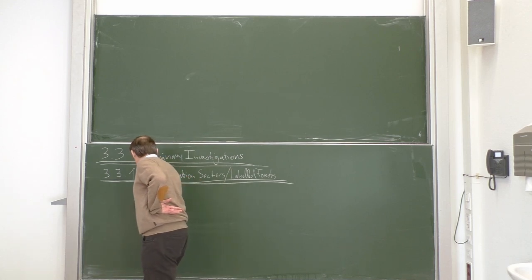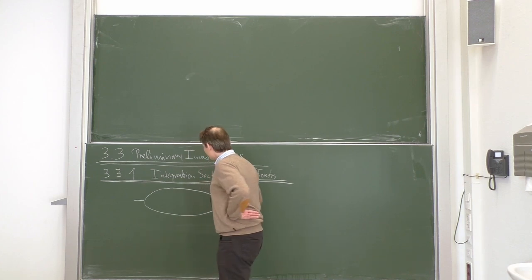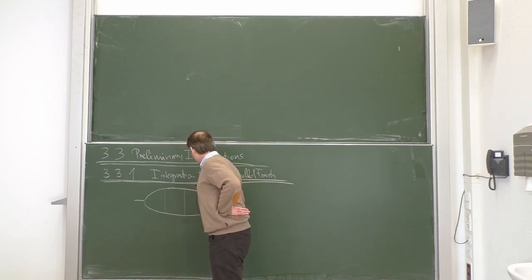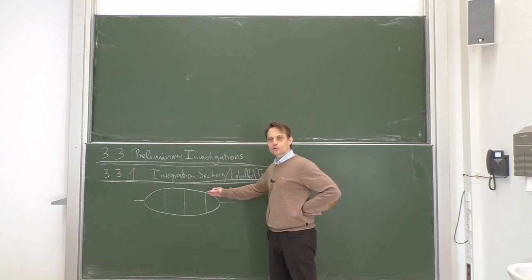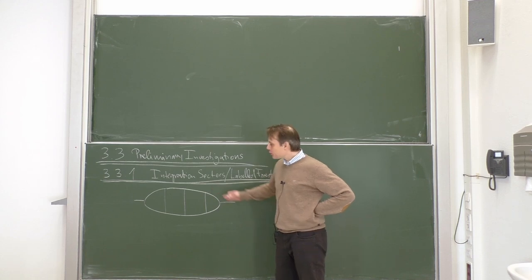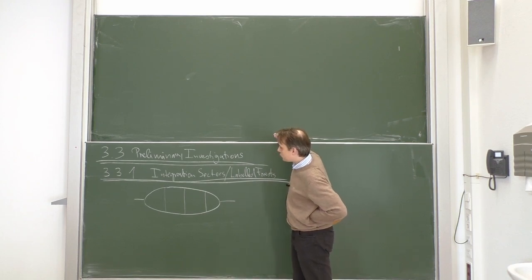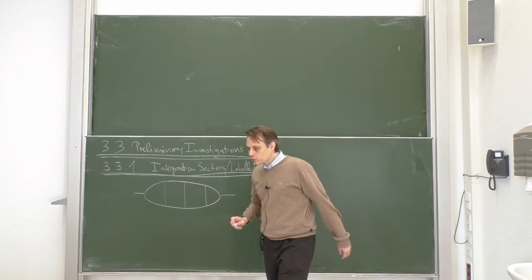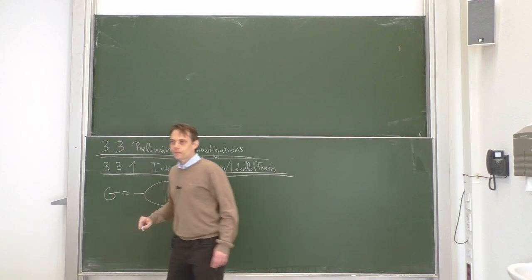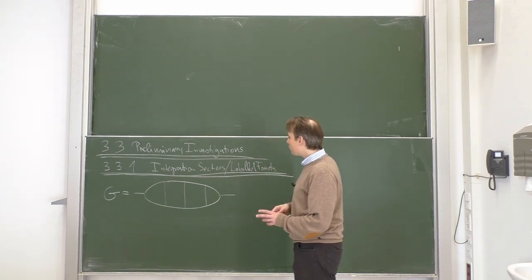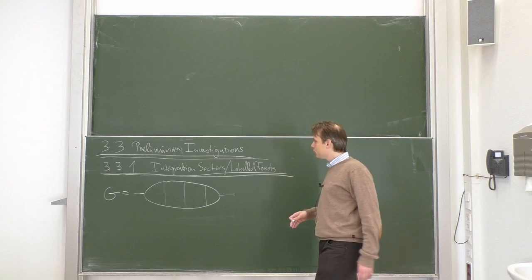We can split up an integral over all the alphas into these different sectors and look at the behavior of each sector. Let us do it for an example — a four-loop graph. It is again the same structure of letter-type graphs. They are simple to draw and good for illustrating the general principles. This is our graph G, and now let us directly do the example and then draw some general conclusions which follow in an obvious way.